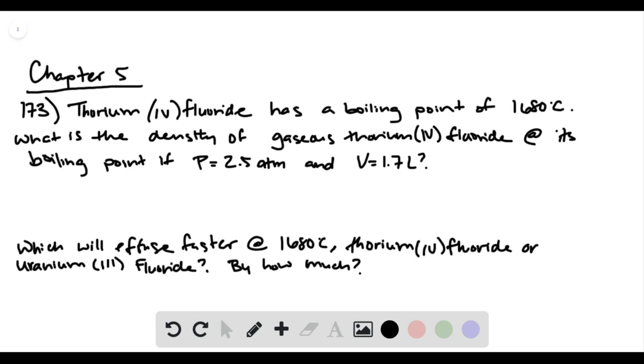Problem 173 says that solid thorium-4-fluoride has a boiling point of 1680 degrees Celsius. This problem asks what the density of gaseous thorium-4-fluoride is at its boiling point under a pressure of 2.5 atmospheres and a volume of 1.7 liters. It also asks which gas will effuse faster at this boiling point, thorium-4-fluoride or uranium-3-fluoride, and by how much.